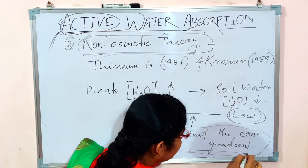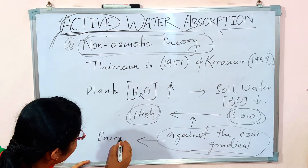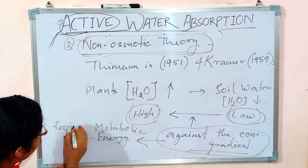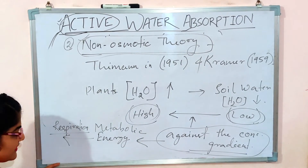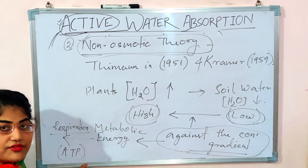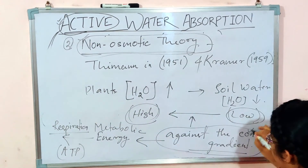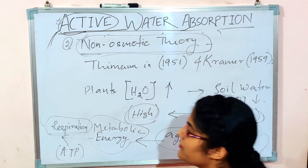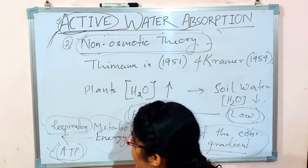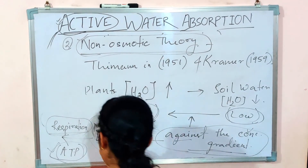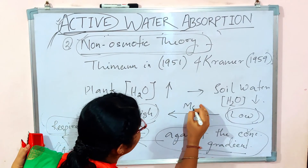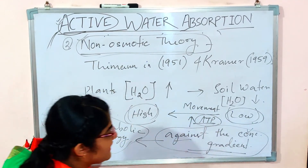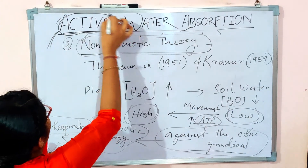Any process that occurs against the concentration gradient requires energy — metabolic energy. That energy comes from the respiration process in the form of ATP, which stands for adenosine triphosphate. Because ATP or metabolic energy is involved in this process, it is also known as active water absorption.